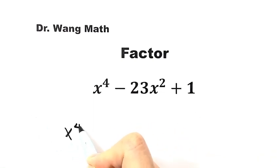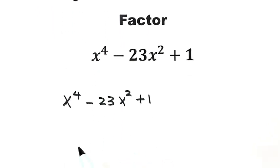x⁴ - 23x² + 1. First, let's reorganize the three terms. We're going to put x⁴ first, then plus 1, then minus 23x².